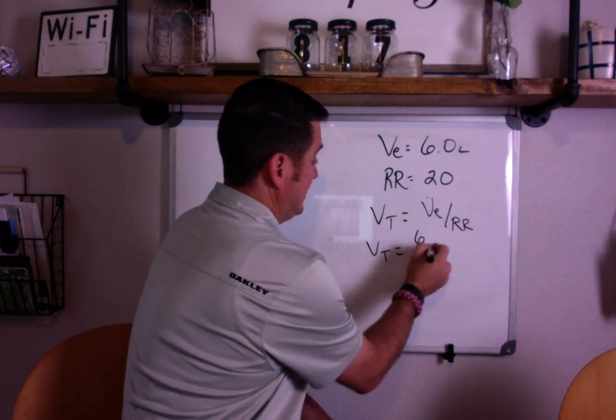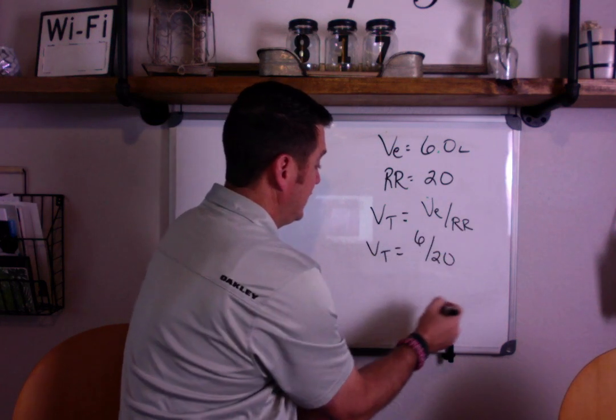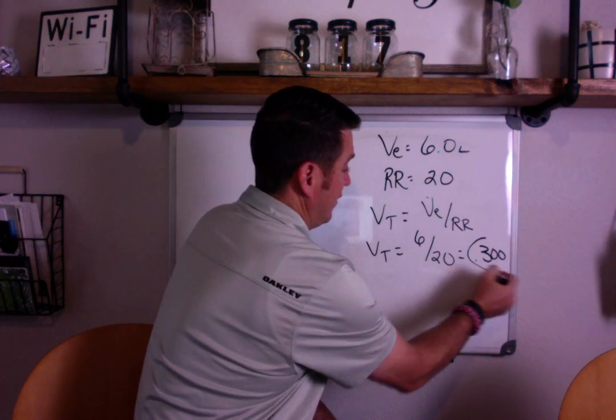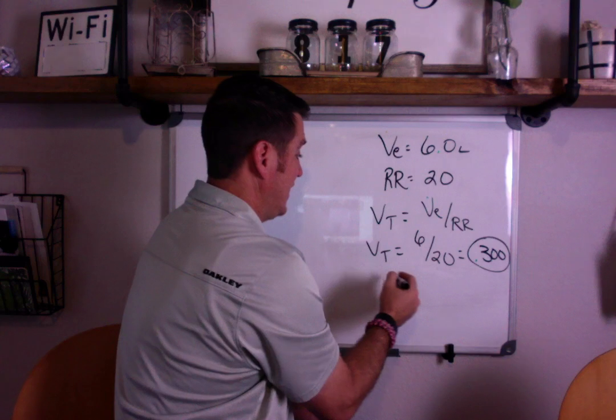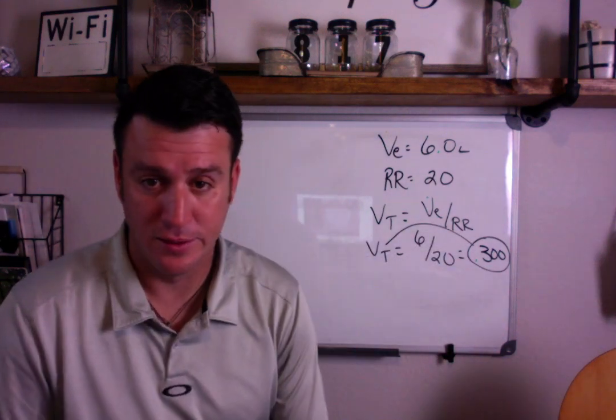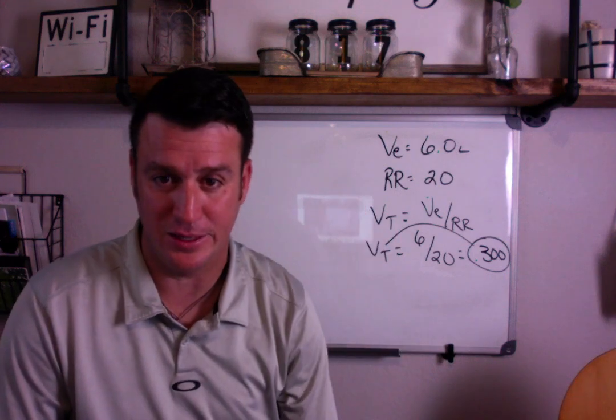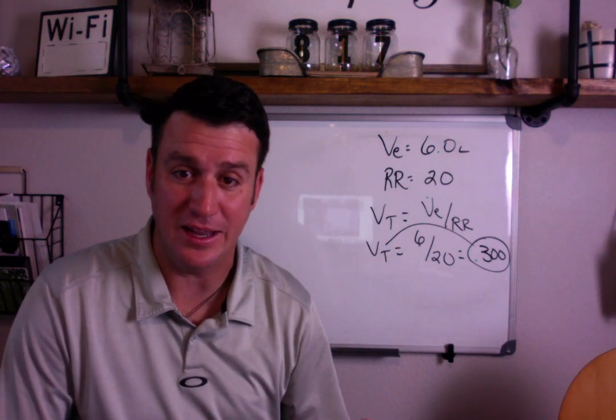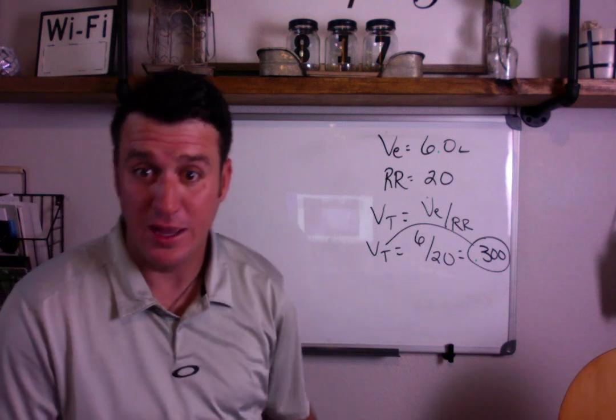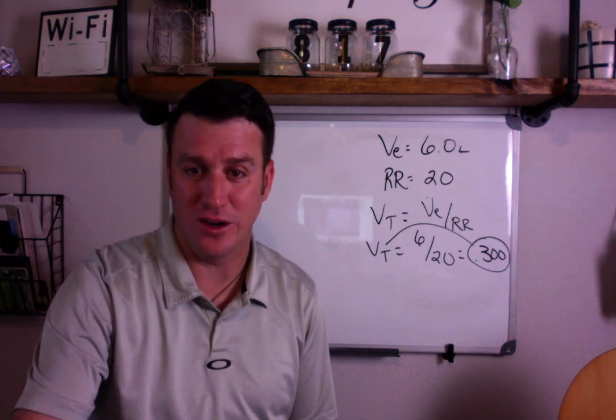Tidal volume equals minute ventilation divided by respiratory rate. So, 6 divided by 20 equals 0.3. So, our spontaneous tidal volume is 0.3 and you just used the minute ventilation formula to calculate an average spontaneous tidal volume.